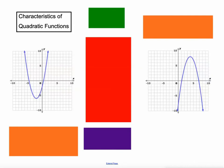I've got two different quadratic functions here — the graphs of quadratic functions. This shape is called a parabola. I've got a parabola that's going up and I've got a parabola that's going down here. And we're going to talk about some different, very important characteristics.